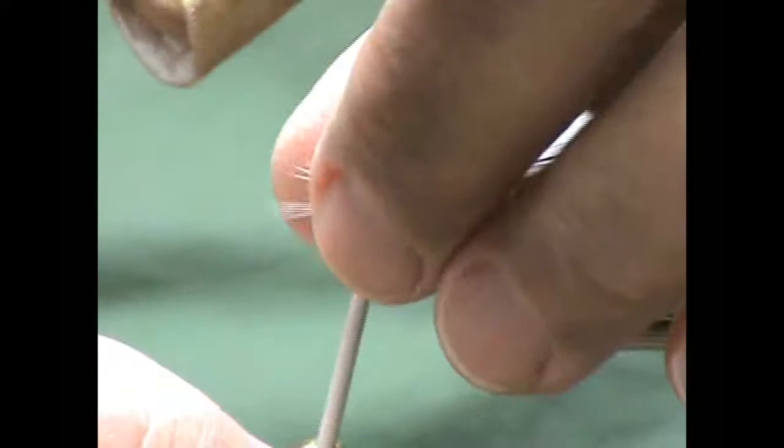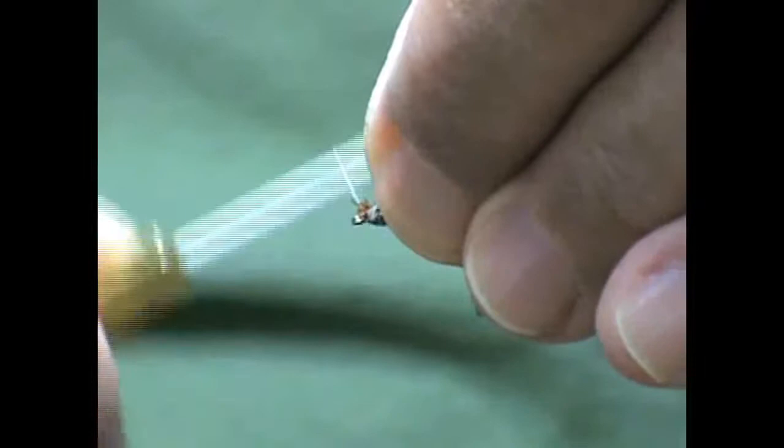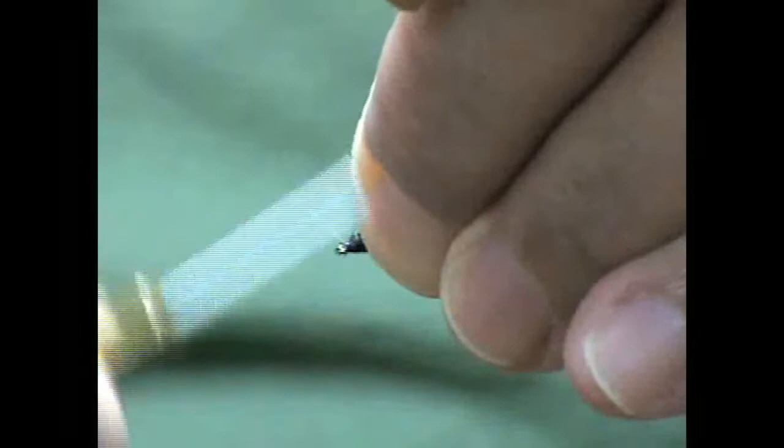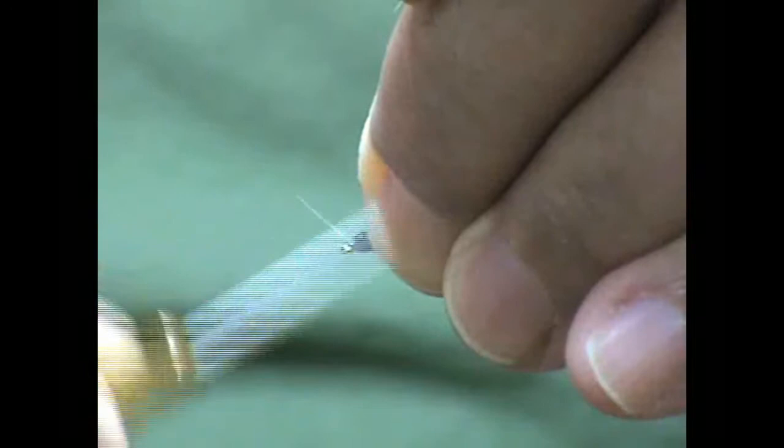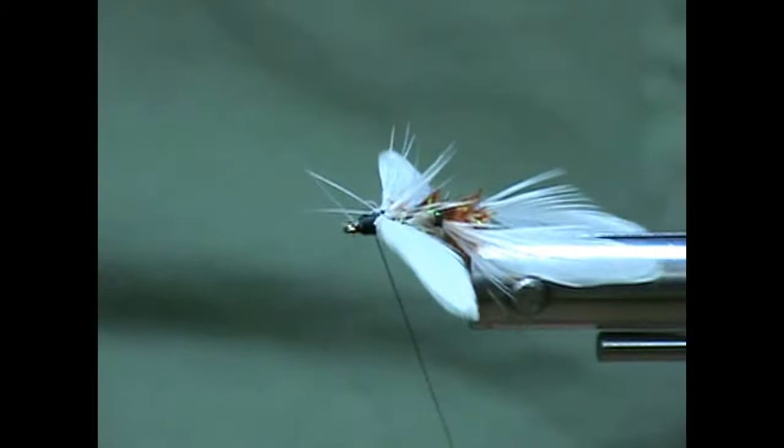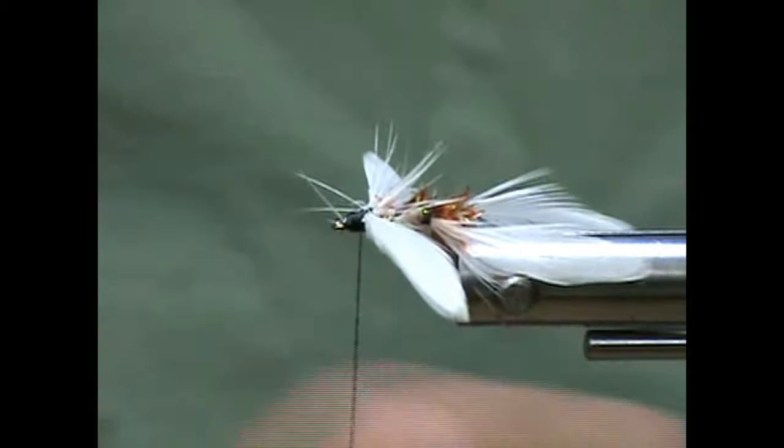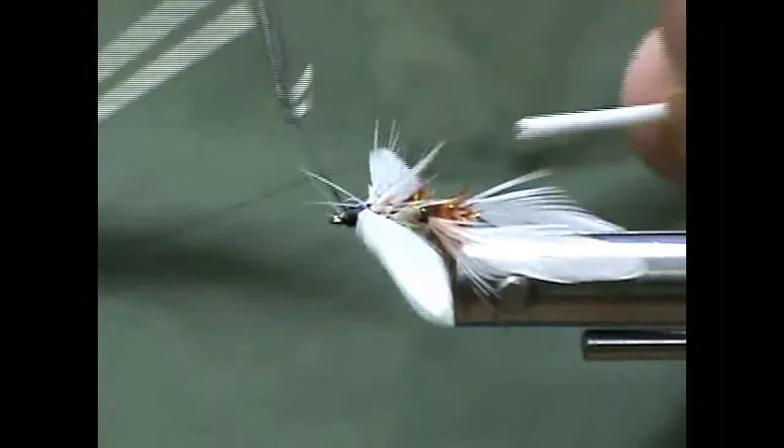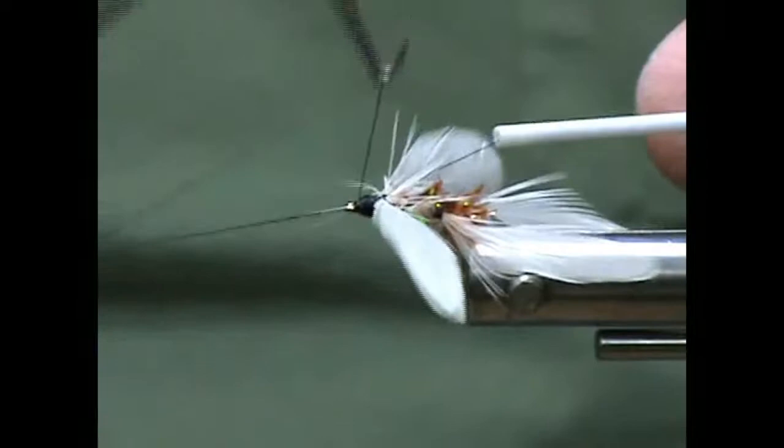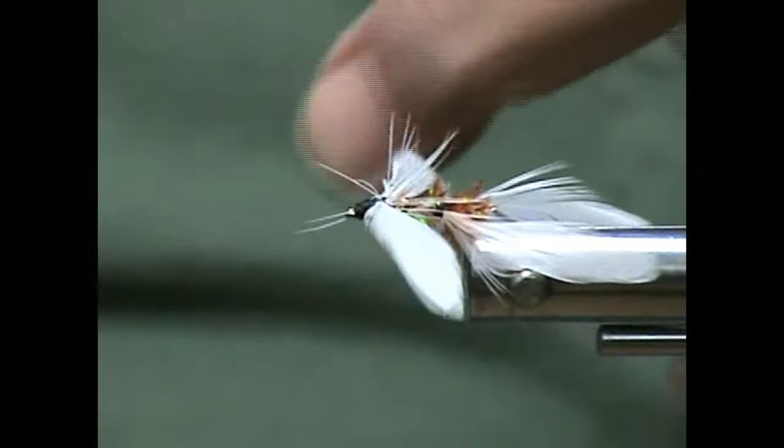And I'm just going to go ahead and lift those feathers up a little bit. Okay, and now I'm just going to start creating the fly. Wrap up a decent head here. And I'm going to take a little bit of the crazy glue and run that alongside my thread. And I'm going to tie in some whip finish knots here. Pull it tight.